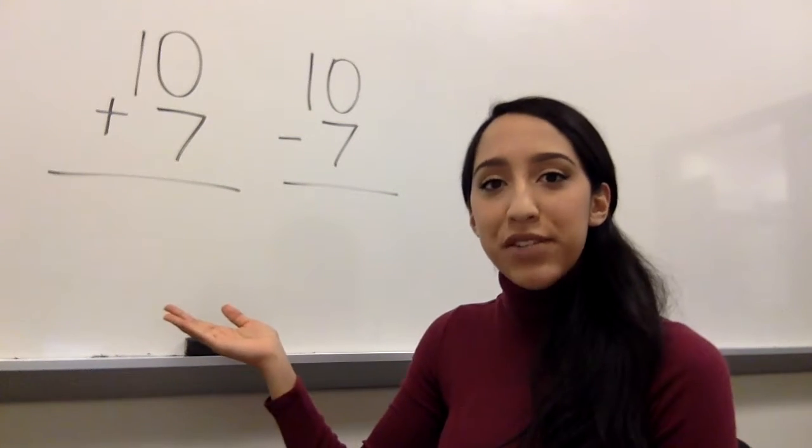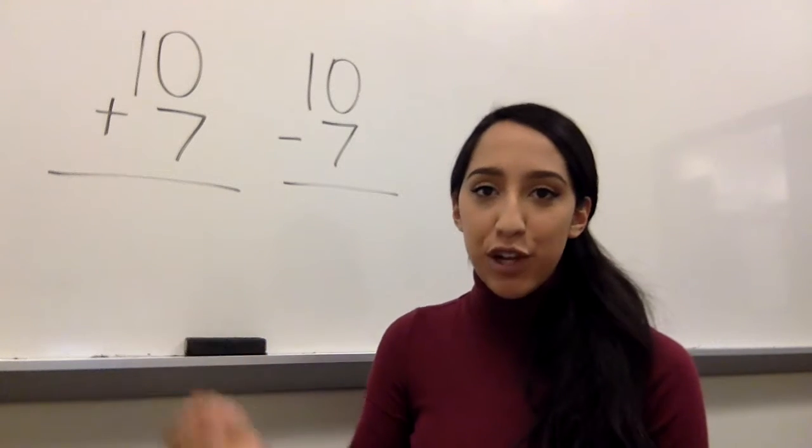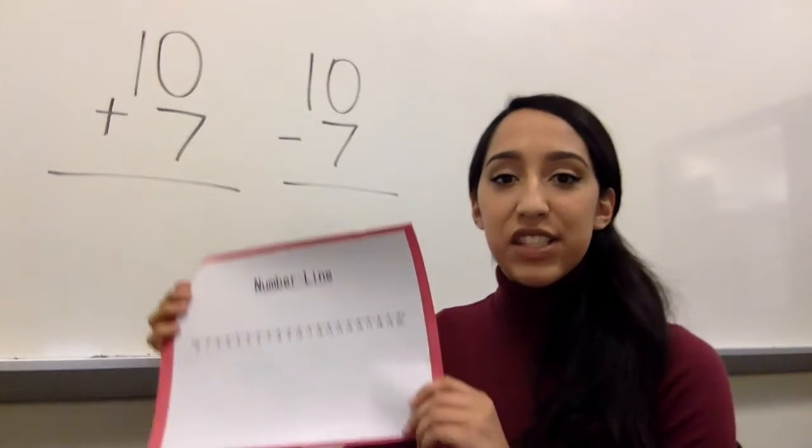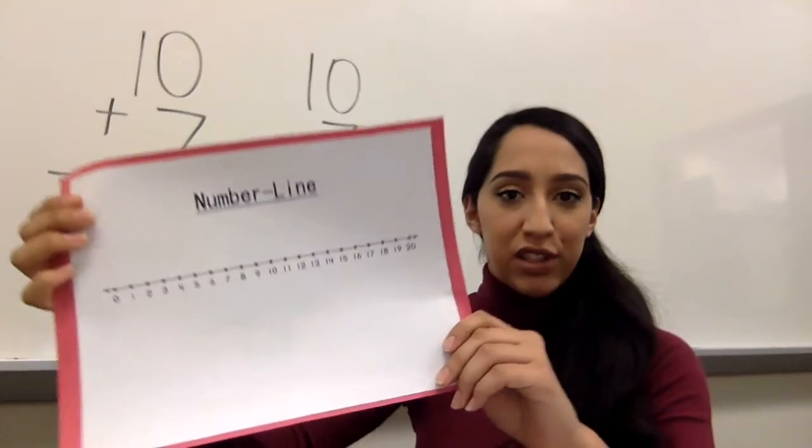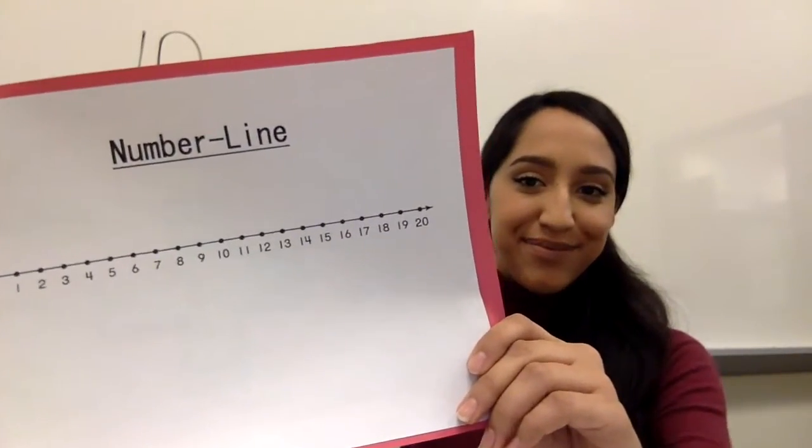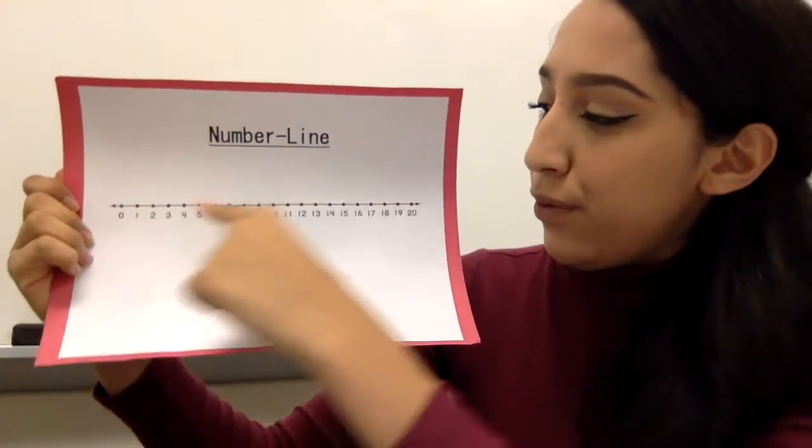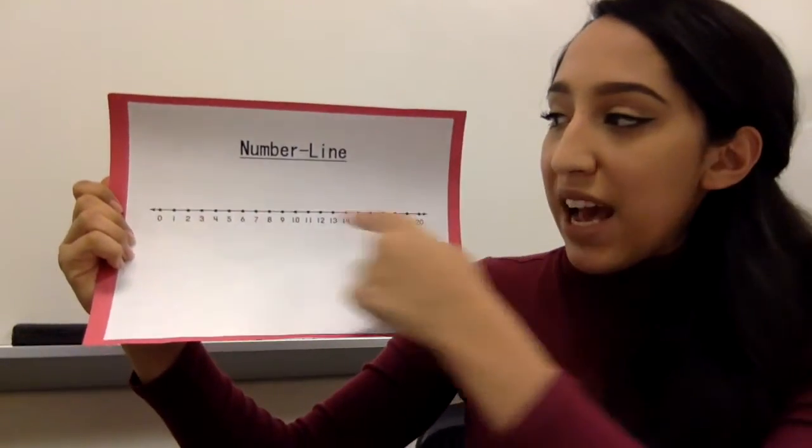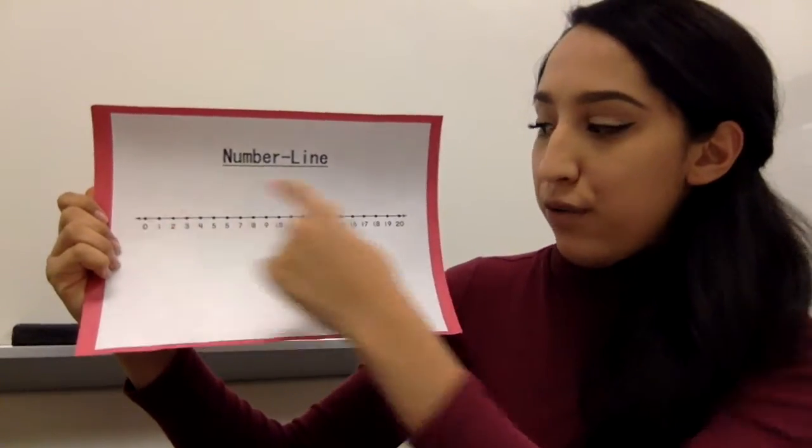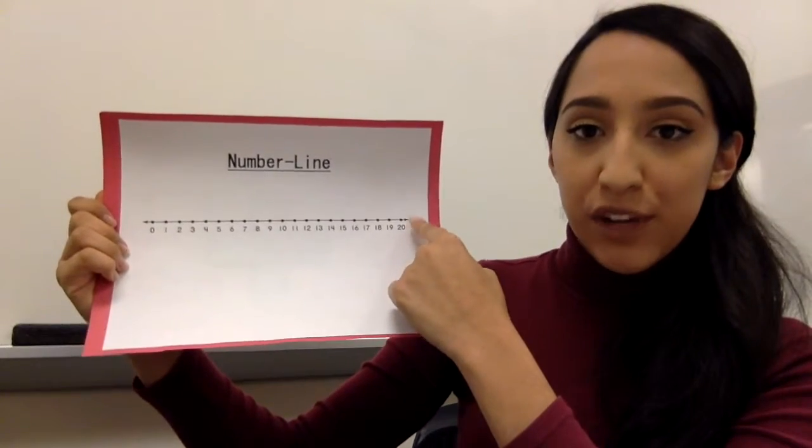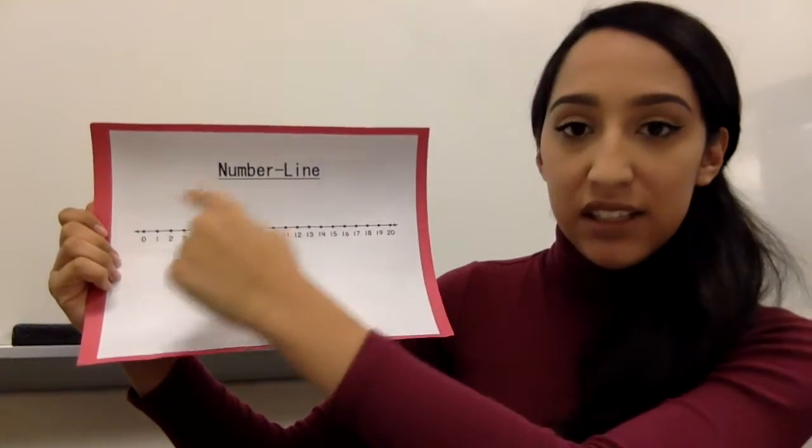Okay, so this is one method we've been using in class to add and subtract. But we will be adding and subtracting on the number line, which looks a little like this. The number line is numbered 0 through 20. When you add, you move from 0 to 20. And when you subtract, you're going from 20 to 0.